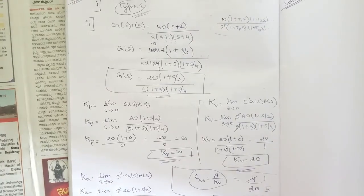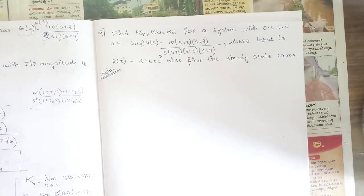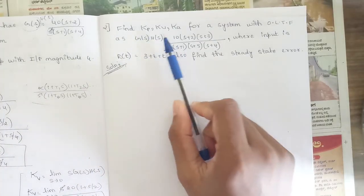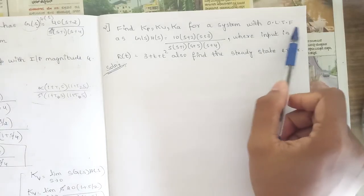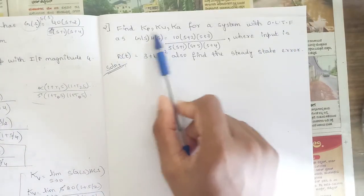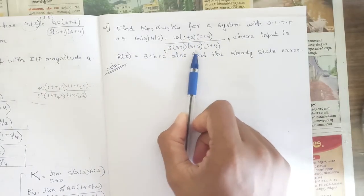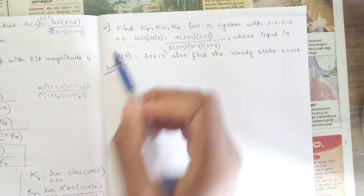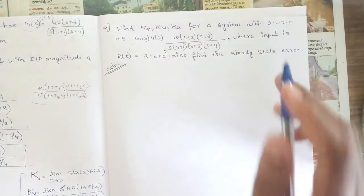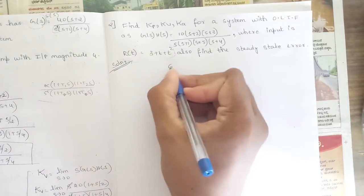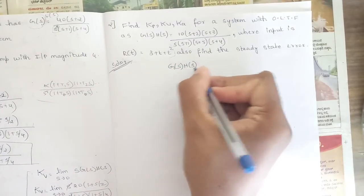Now let's solve the second problem. The question asks us to find Kp, Kv, and Ka for a system with open-loop transfer function G(s)·H(s) = 10·(s+2)·(s+3) divided by s·(s+1)·(s+5)·(s+4), where the input is r(t) = 3 + t + t². We also need to find the steady-state error.